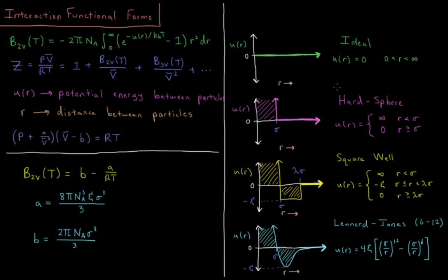If you want to account for the fact that molecules have some finite size and take up space, you can use the hard sphere model. The potential is zero if the distance is greater than sigma — the effective molecular radius — and infinite if the distance is less than sigma, restricting particles from being within sigma of each other. At short distances, e to the minus infinity is zero, giving minus one in the integrand, so the virial coefficient is positive. The effect is that the compressibility factor increases as molar volume decreases, reflecting the occupied space of each particle.